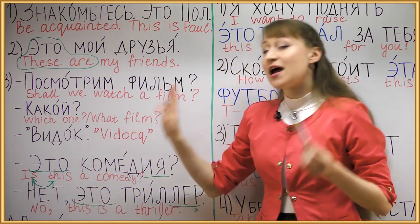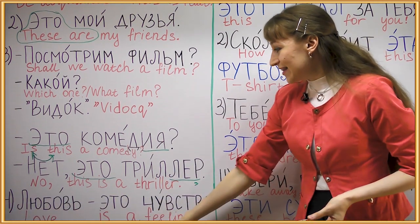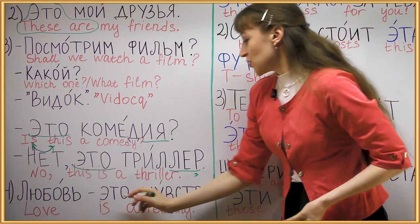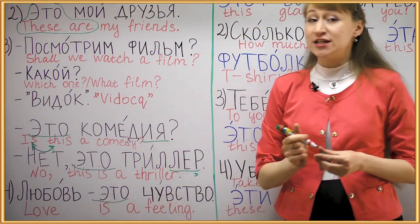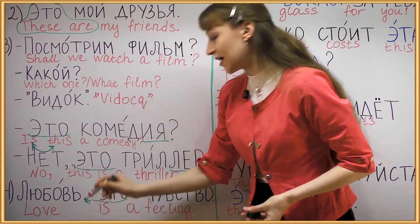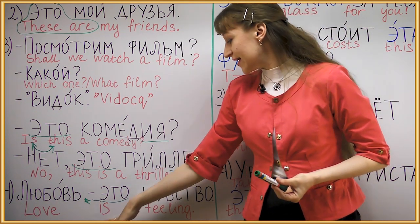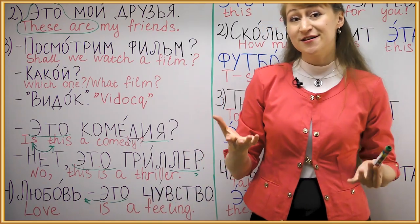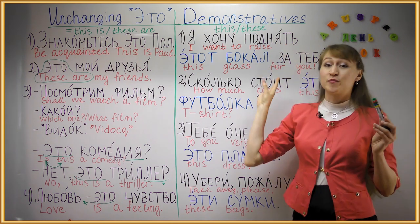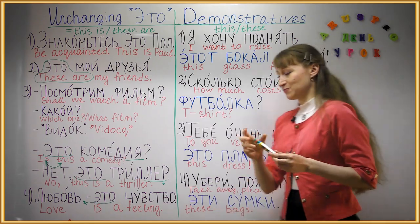Another example: любовь — это чувство. Here we have a definition — when we define something, we use это and put a little dash before it. In English it's just the verb 'to be': 'love is a feeling.' But in Russian when it's a definition, we use the unchanging это. Now let's move to the demonstrative pronouns этот, эта, это, and эти.